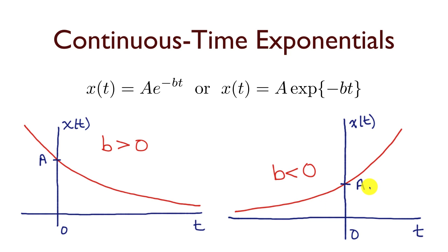And again, the rate of growth is going to depend on the value of b. The more negative b is, the faster this is going to grow. Now, in discrete time, we get a similar behavior.